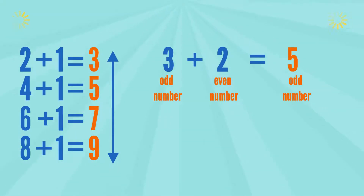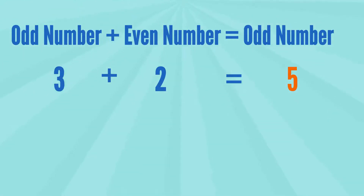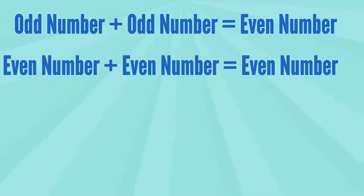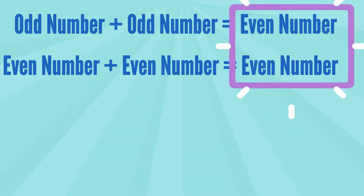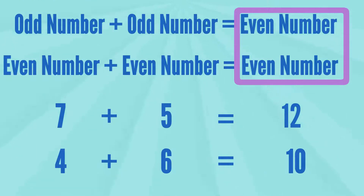3, odd number, plus 2, even number, equals 5, odd number. That means odd number plus odd number equals odd number. Odd number plus 1 equals even number. Even number plus 1 equals even number. For example, 7 plus 5 equals 12, and 4 plus 6 equals 10.